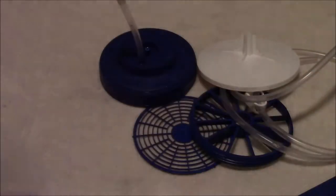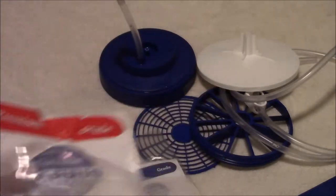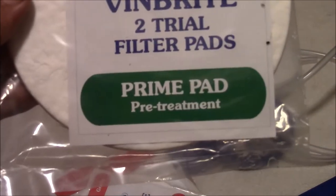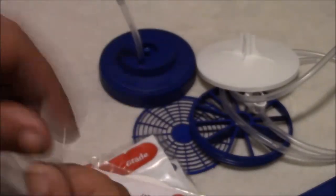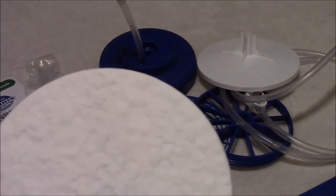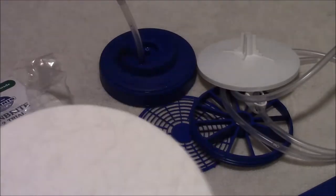What I'm going to do today is because I have wine that was never filtered, I am going to start with the green. They're called pre-treatment prime pads. We'll just open it and this is what the pad looks like. It's made out of a paper type material. It's kind of got a textured surface on it.